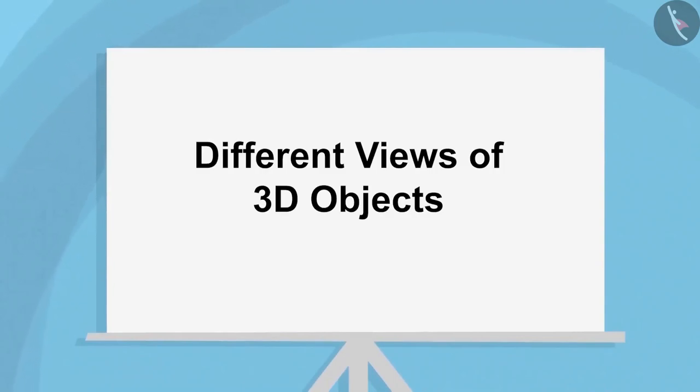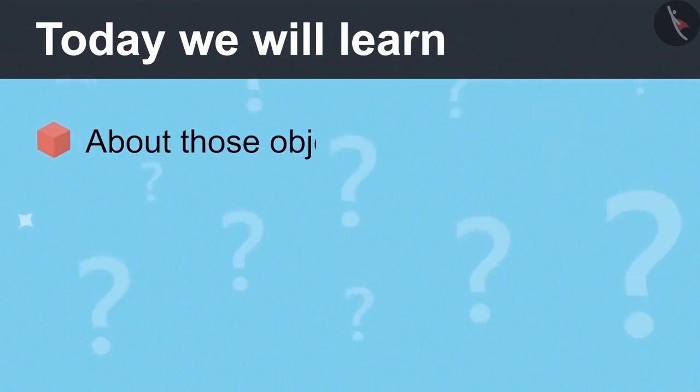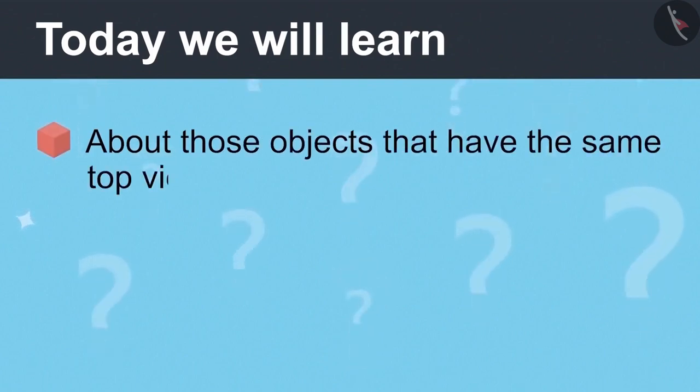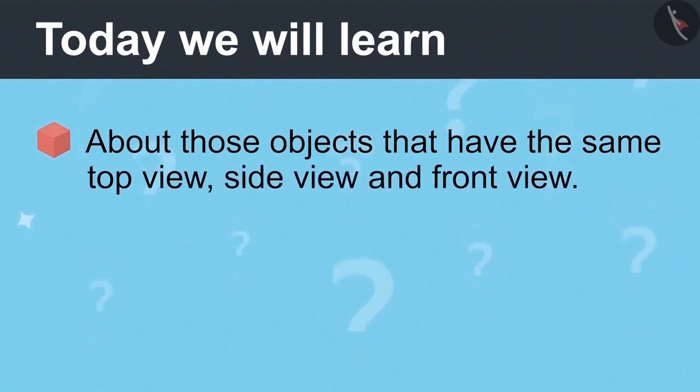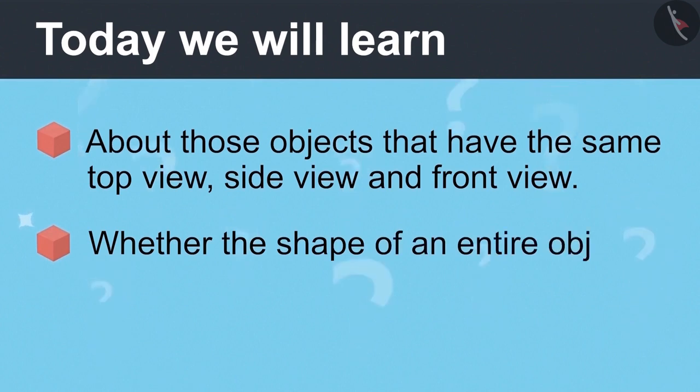Different views of 3D objects, Part 3. Today we will learn about objects that have the same top view, side view and front view, and whether the shape of an entire object can be determined from just three views.